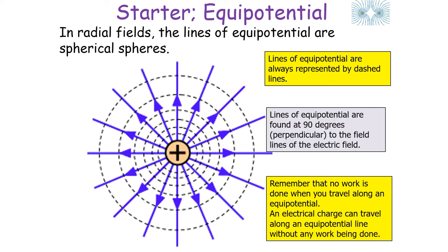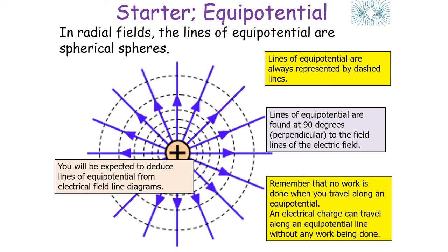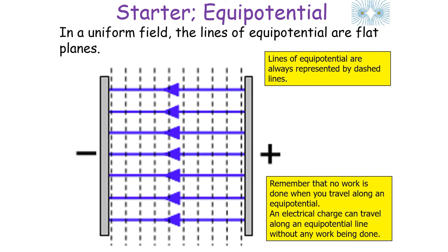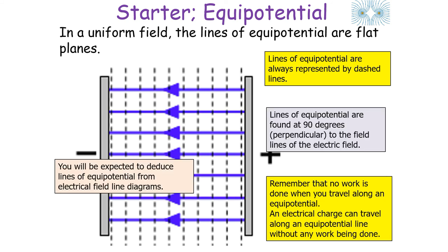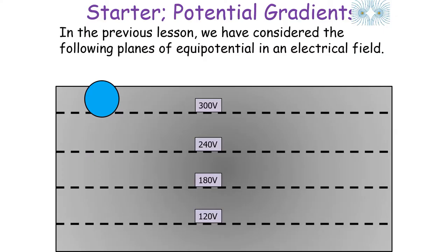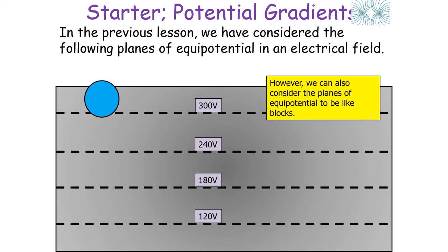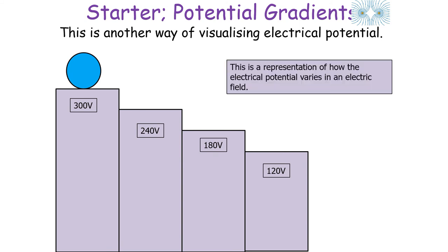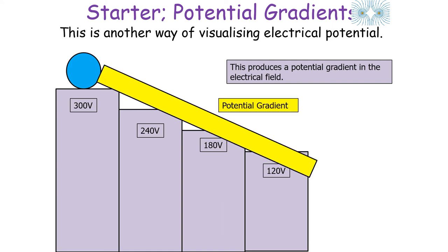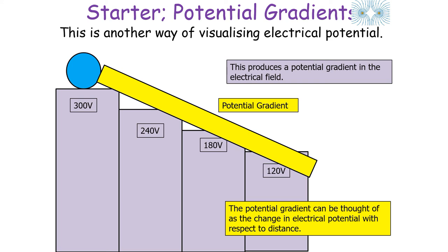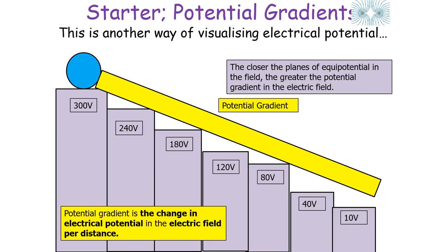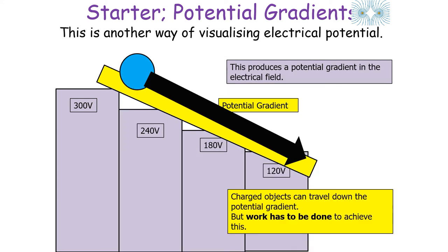Lines of equipotential are found at 90 degrees, perpendicular to the field lines, and you'll be expected to deduce equipotential lines from electrical field line diagrams, whether uniform or radial. The last topic is potential gradients. We can visualise planes of equipotential as blocks representing how electrical potential varies in an electrical field — how the energy stored per coulomb varies. This produces a potential gradient: the change in electrical potential per distance. The closer the planes of equipotential, the greater the potential gradient.